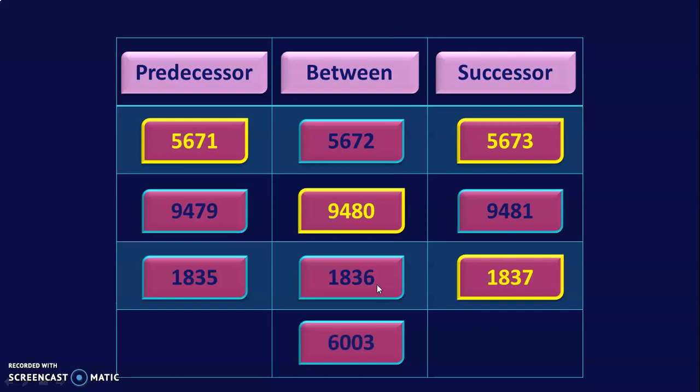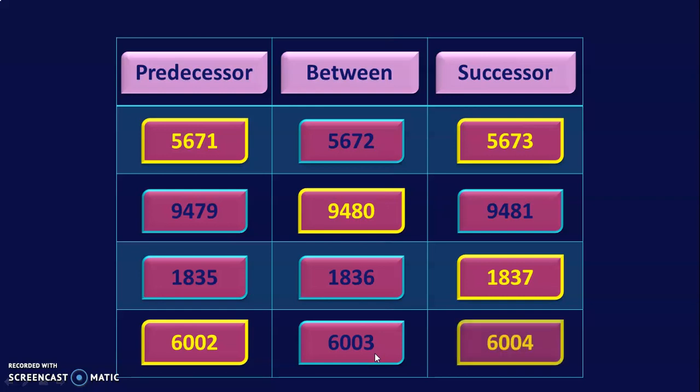Let us do the last example. The number given is 6003. To arrive at the predecessor, subtract: 6003 minus 1 gives 6002. Add 1 to arrive at the successor: the answer is 6004. Hope you are clear with the concept of predecessor, successor, and between numbers.